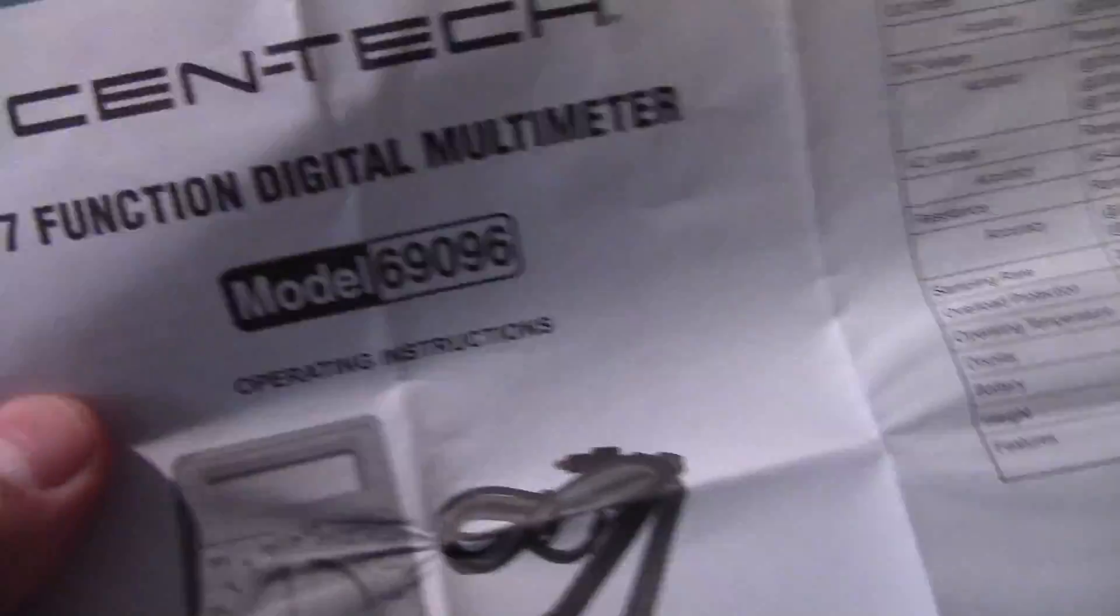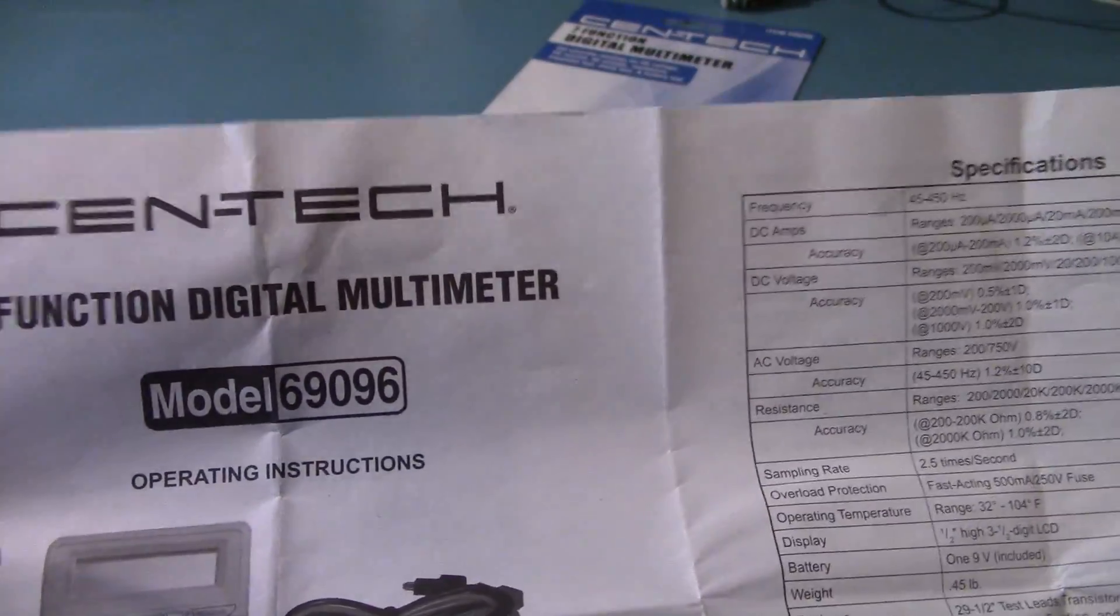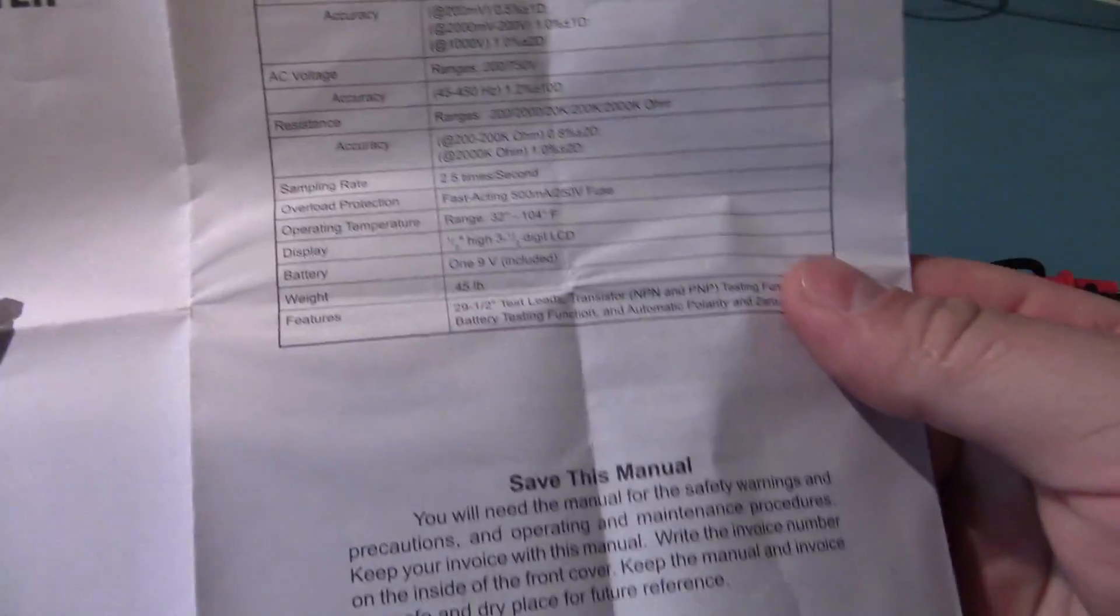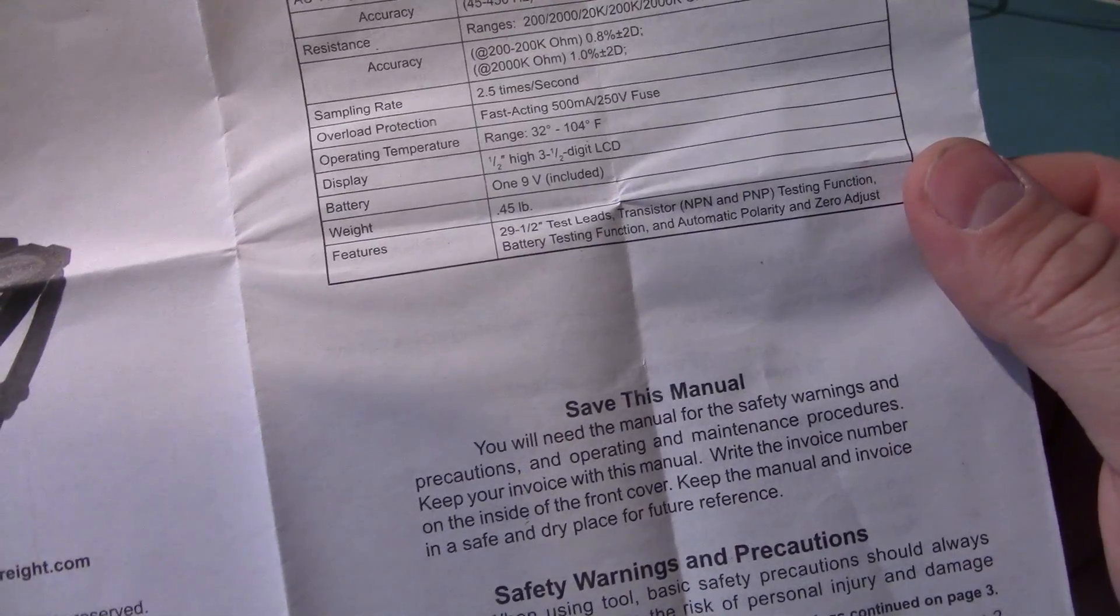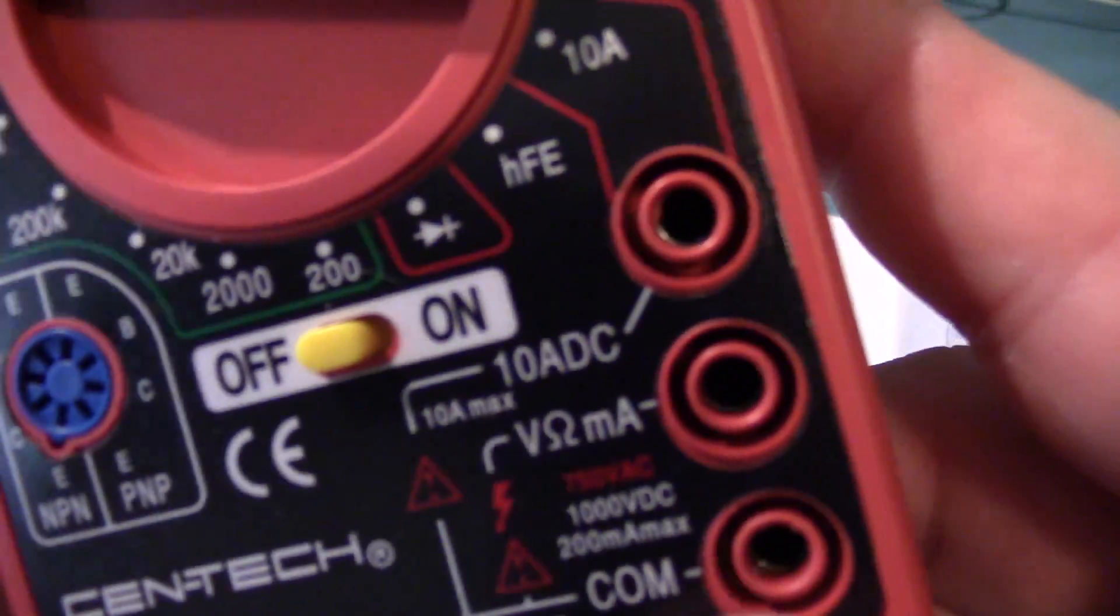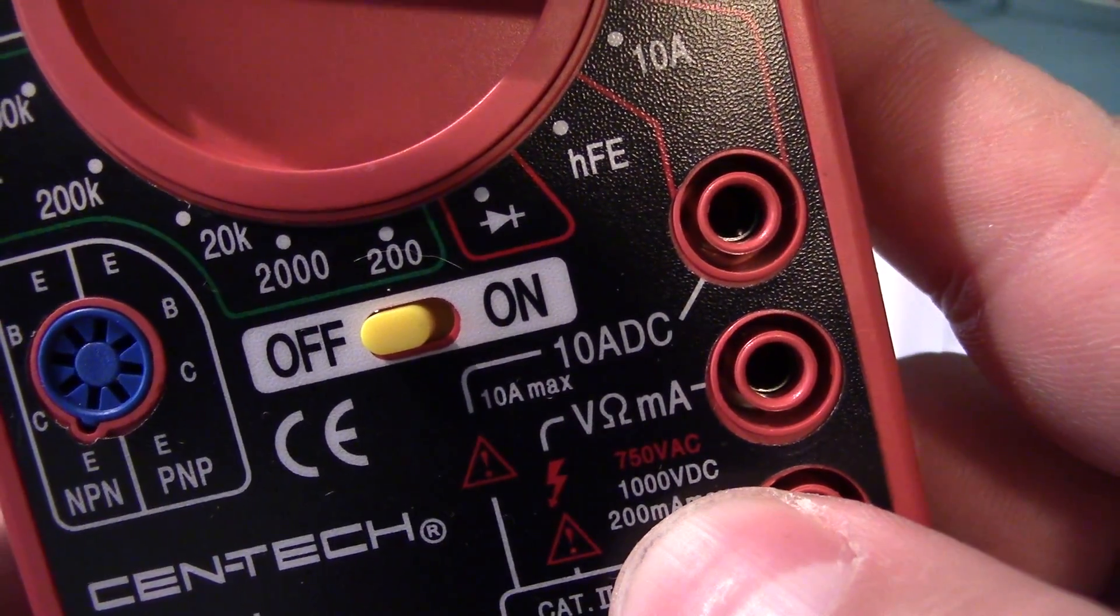Inside, it's got a model number, the 69096. Save this manual, you will need this manual for the safety warnings and precautions. I'd like to point out that this $5 multimeter is supposedly rated for a thousand volts.